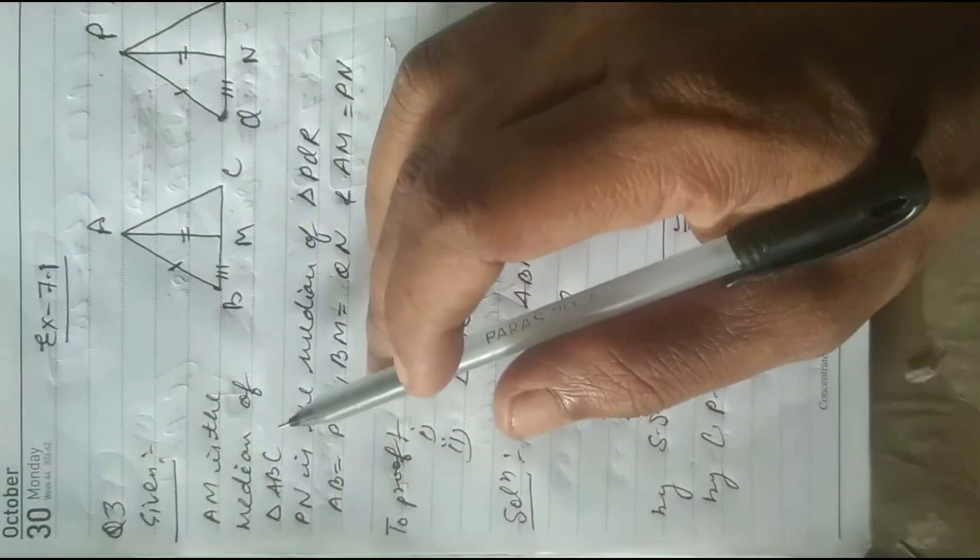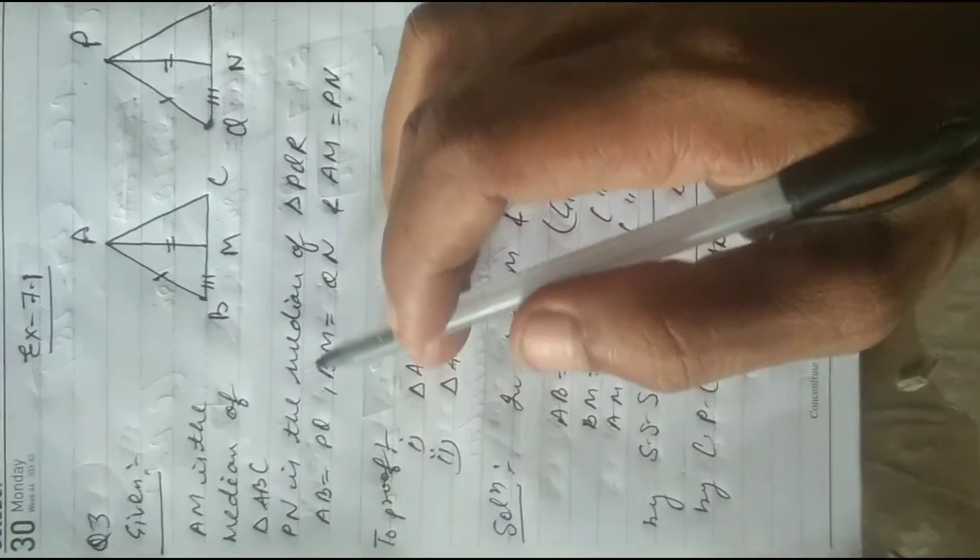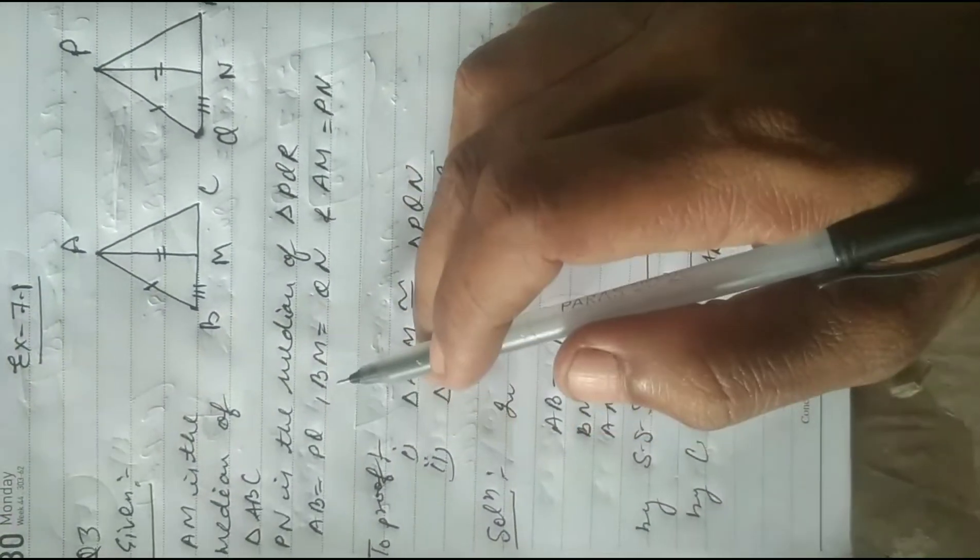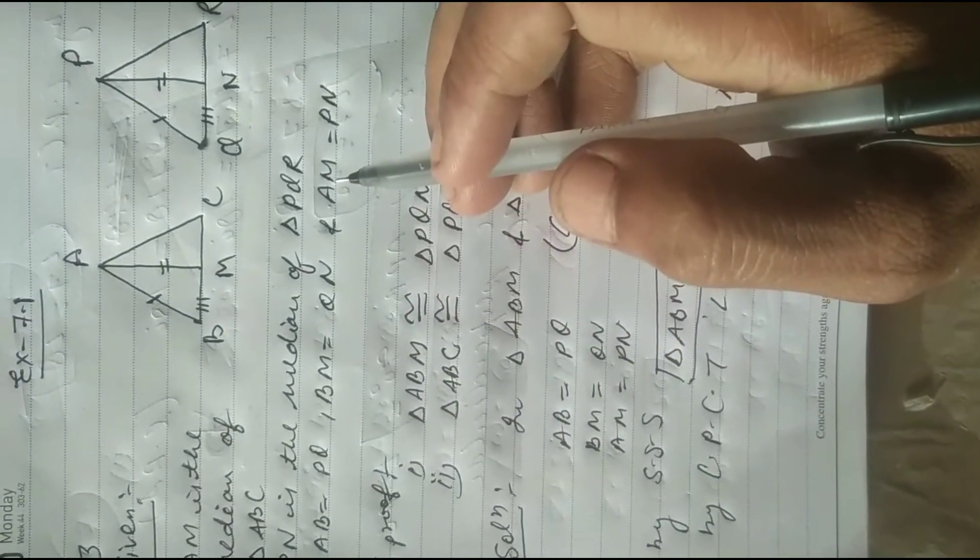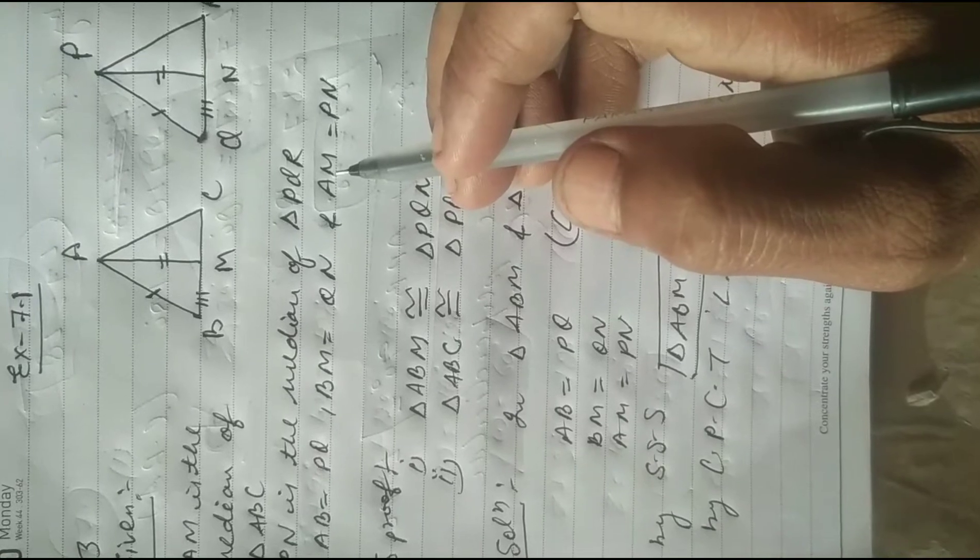Given AM is the median of triangle AVC, PN is the median of PQR, AV equal to PQ, BM equal to QN, and AM equal to PN.